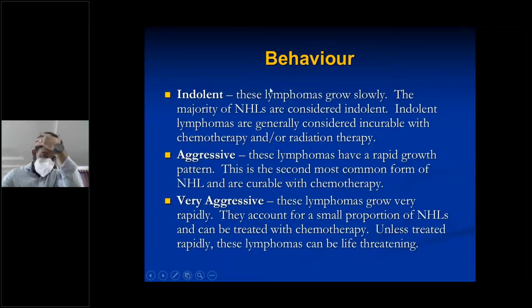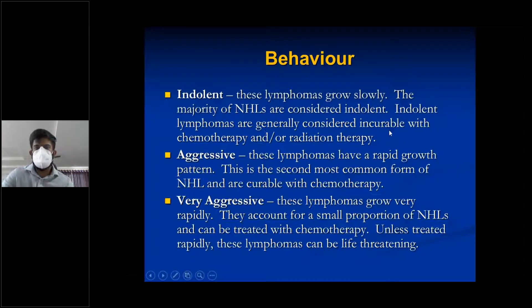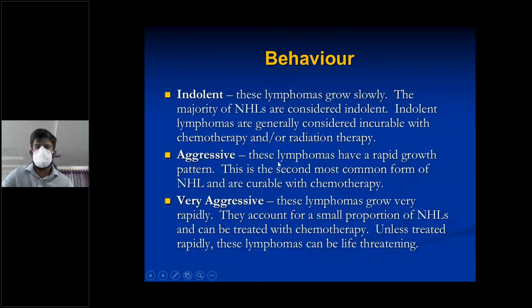According to behavior: indolent lymphomas grow slowly — the majority of NHLs are indolent. They are generally considered incurable with chemotherapy or radiation therapy, meaning they do not respond well to these treatments. Aggressive lymphomas have a rapid growth pattern and are the second most common form; they are curable with chemotherapy if diagnosed during rapid growth phase, though remission may occur.